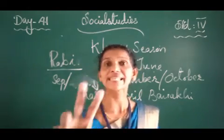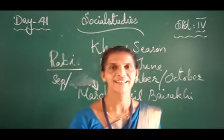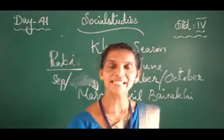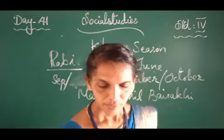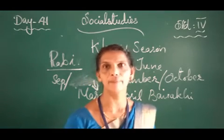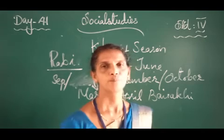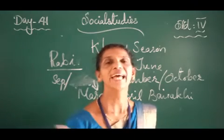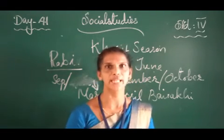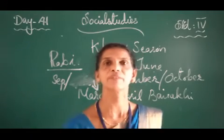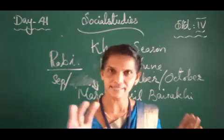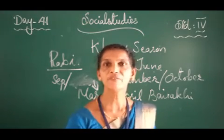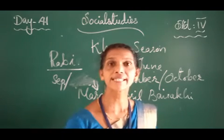Mainly two agricultural seasons are there in India — Kharif and Rabi. Kharif season begins with the onset of the South West monsoon from May and June to September or October. Rice is a very good example of a Kharif crop. Rabi season starts with the onset of the North East monsoon, seeds are sown in September, and it is harvested in March or April. Wheat is a very good example of a Rabi crop.